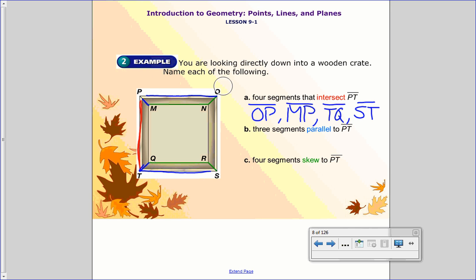Now we have B, three segments that are parallel to line PT. So again, we're focusing on this. So I need three segments that are going the same direction, never going to cross it. And these can be on different planes. So here, we could do segment OS. Segment MQ. And finally, segment NR. There we go.